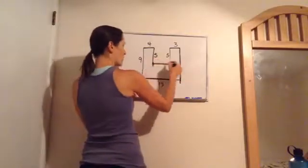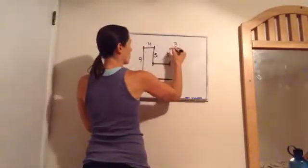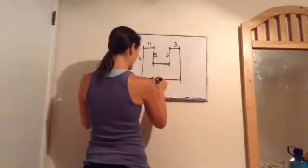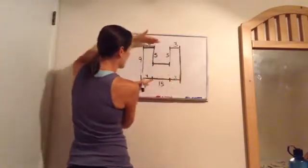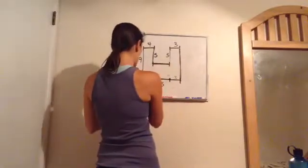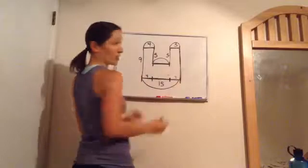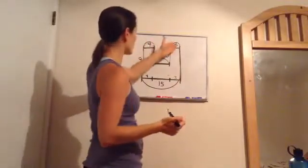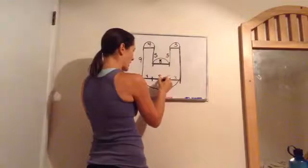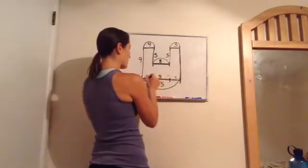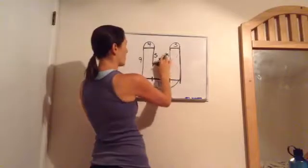From here to here is 15. We know the parallel lines up top are 4 and 3, so 4 and 3 account for part of that 15. Since 4 plus 3 is 7, and 8 and 7 make 15, this missing spot is 8. So 3 plus 8 plus 4 equals 15 — those were used to help us find the missing side.